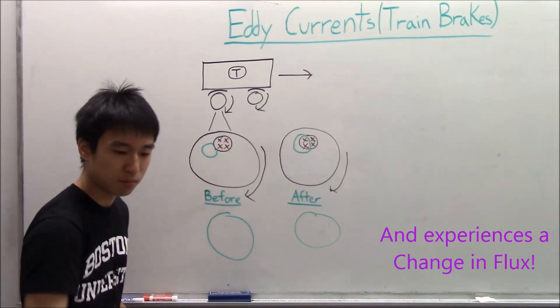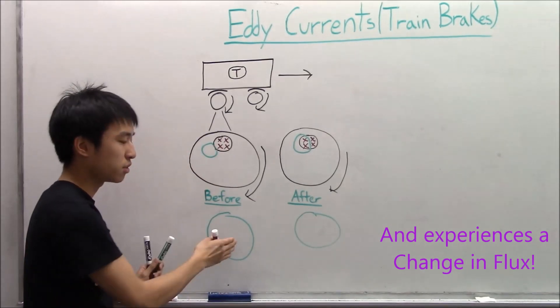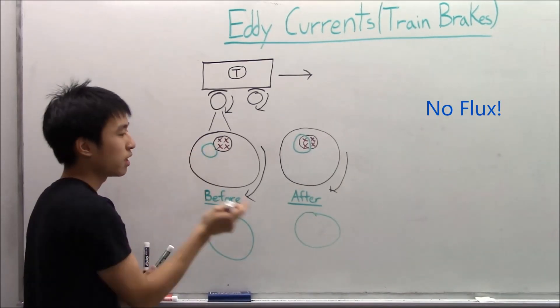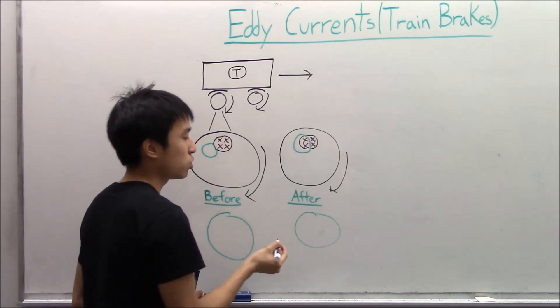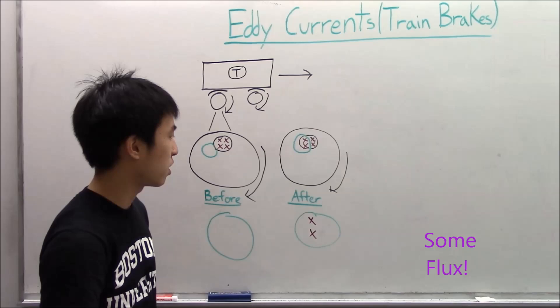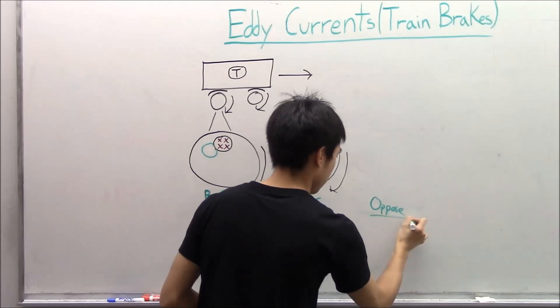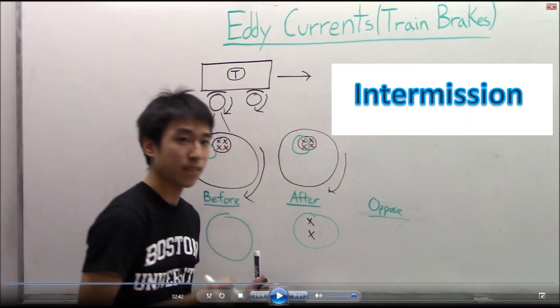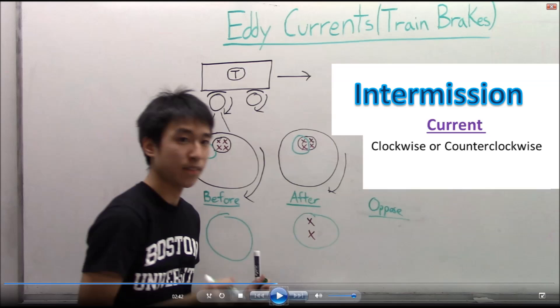So before, there are no magnetic field lines going in, as you can see, and afterwards we're going to get about two magnetic field lines going in. So what do you think our opposing picture is going to look like? It's intermission time — I need a rest, and it's time for you guys to figure out which direction the opposing induced current will be pointing. Will it be clockwise or counterclockwise?